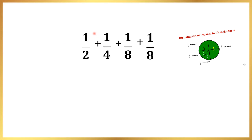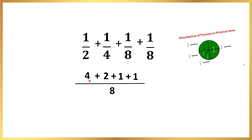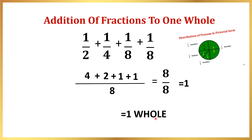Let us now verify using the previous slide. We saw: half of the sweet rice to Kaushalya, one-fourth to Sumitra, one-eighth to Kaikeyi, and the remaining one-eighth to Sumitra again. Taking the common denominator as eight, we get: four plus two plus one plus one, which equals eight over eight, which equals one whole. See the beauty — this is nothing but addition of fractions equaling one whole. How beautifully it has been depicted in our epics. This is the true aesthetics of mathematics.